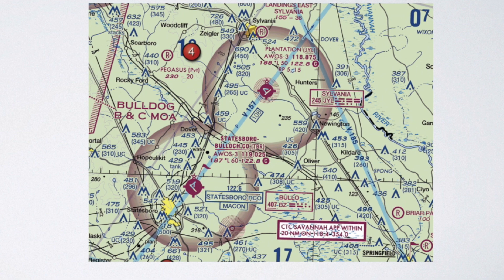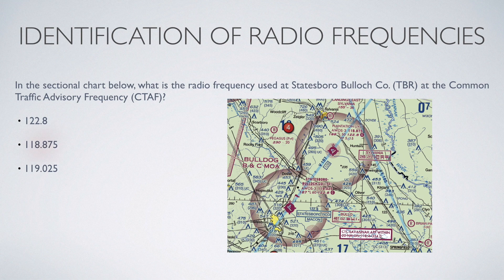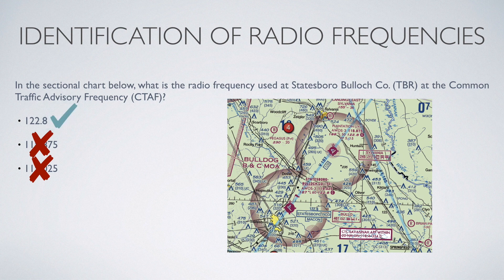Remember, when the radio frequency is in the spot at the end of the second line after the airport elevation, lighting, and runway information, the sectional legend told us that this is also the UNICOM station. To cover the other answers: 118.875 doesn't show up next to the Statesboro Airport at all — it is the AWOS station for Plantation JYL, which is just to the northeast of Statesboro. And 119.025 is the other radio frequency for the Statesboro Airport, but it's actually just the AWOS weather station there. So the correct answer is 122.8 — that is the CTAF frequency, but it also doubles as the UNICOM frequency.